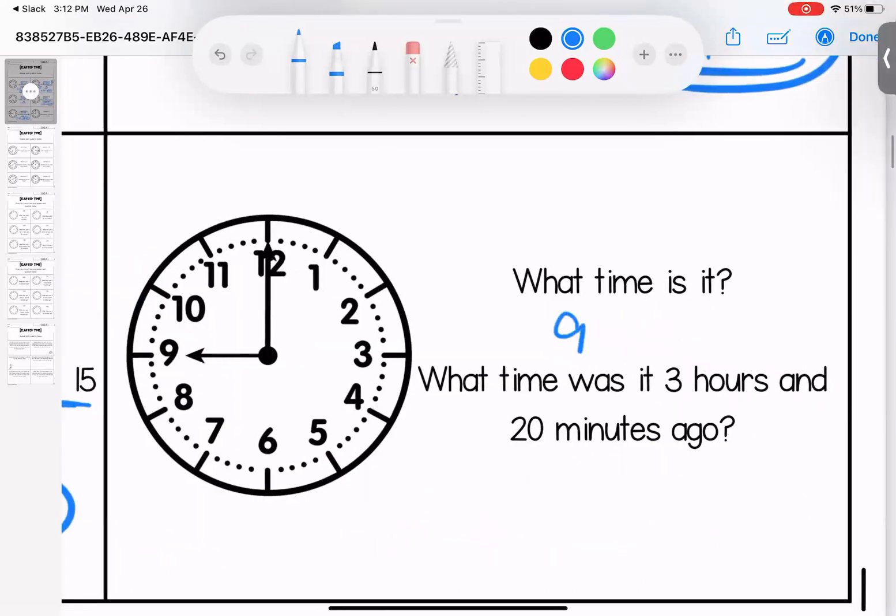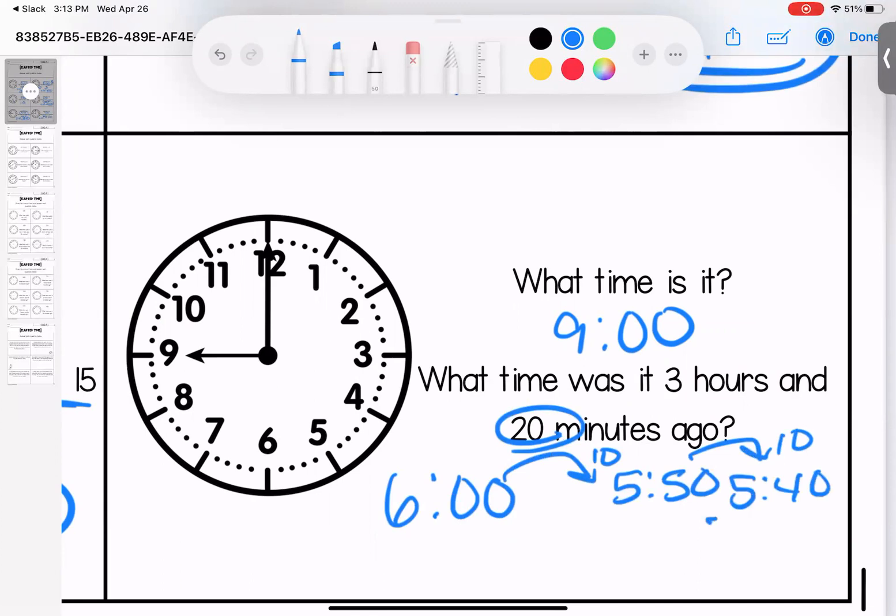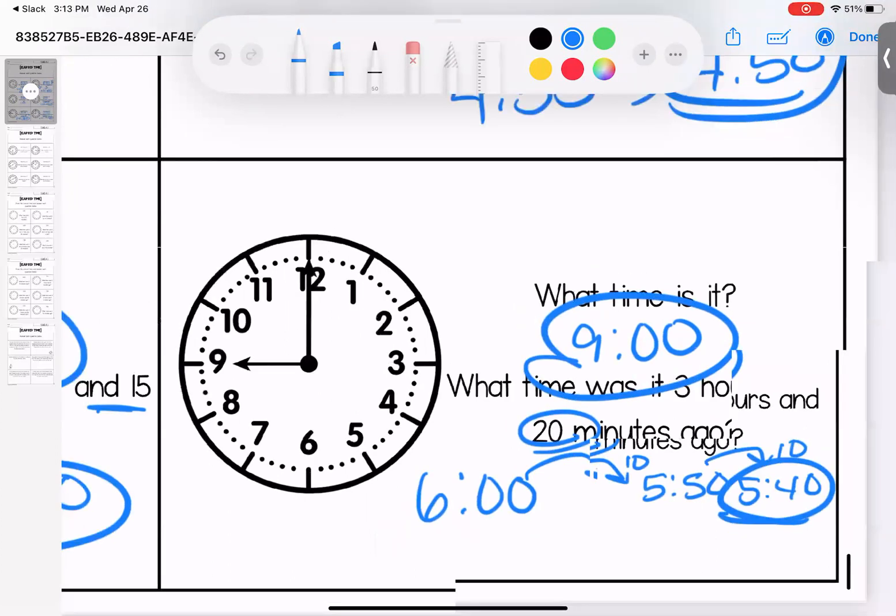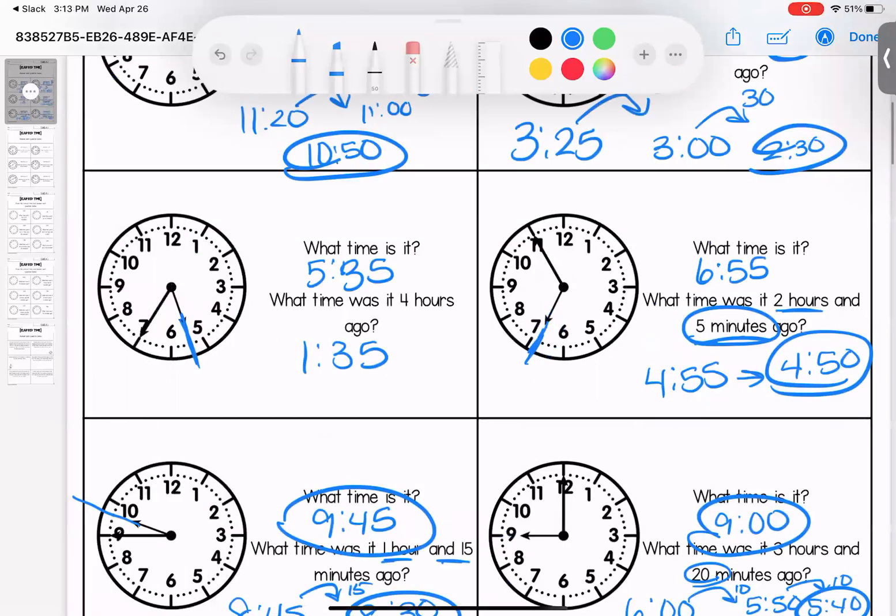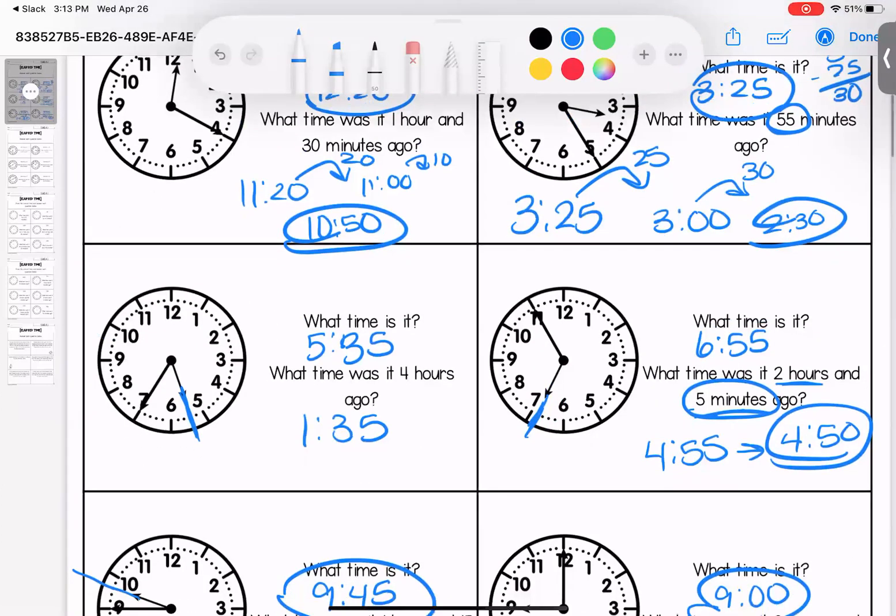Last one on this page, what time is it? It's 9 o'clock. What time was three hours and 20 minutes ago? Well nine minus three takes us to six, and if we want to take off another 20 minutes, 10 minutes is 5:50, 10 minutes is 5:40. Questions, bring them with you to class.